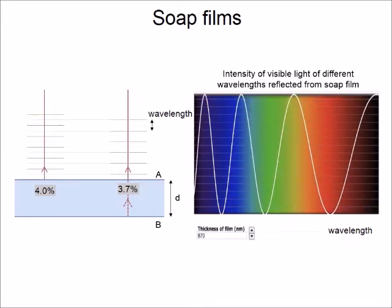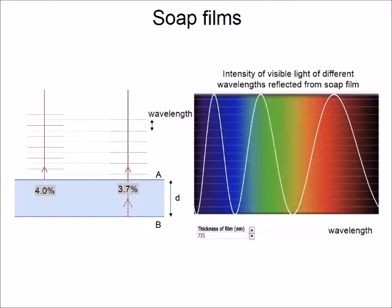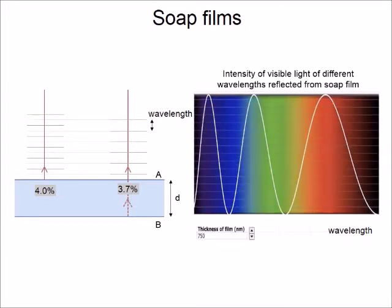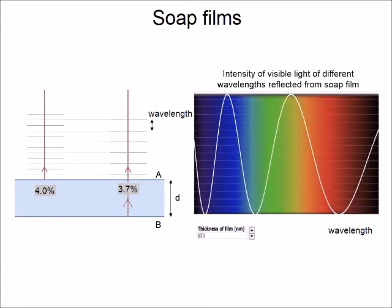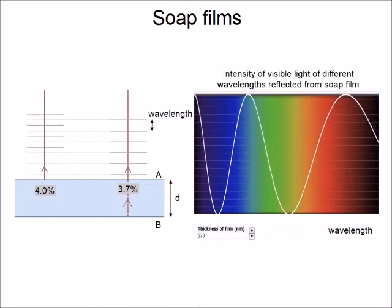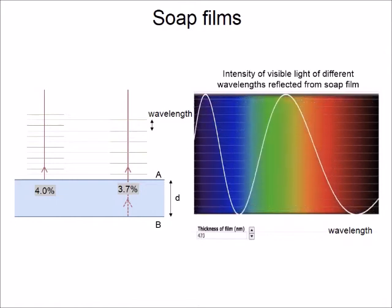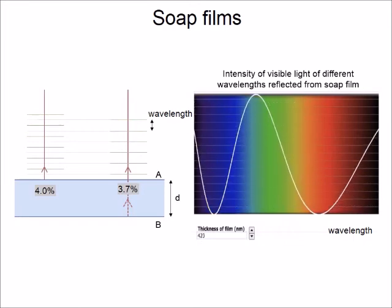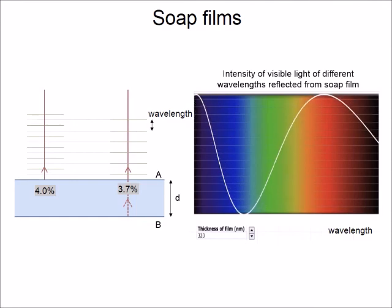When the soap film drains by gravity, the interference pattern changes creating different mixed colors. For instance, at 750 nm thickness, the reflected light is a mixture of blue and red so that the film appears pink. When the film becomes ultra thin below 50 nm, no more light is visible from the reflection and the film becomes black.